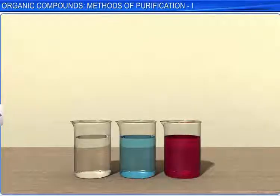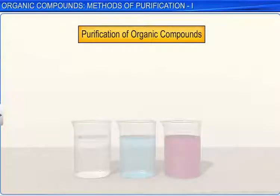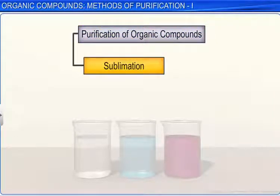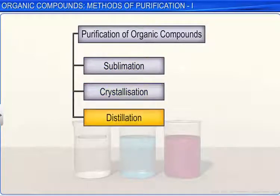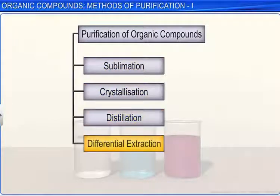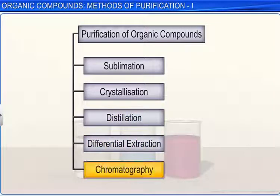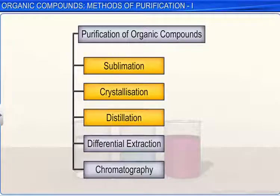Based on the nature of organic compounds and the impurities present in them, organic compounds can be purified using five different methods. These are sublimation, crystallization, distillation, differential extraction, and chromatography. In this module, we will look at the first three methods.